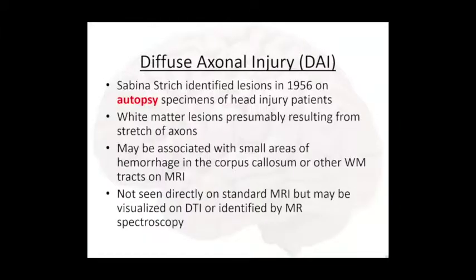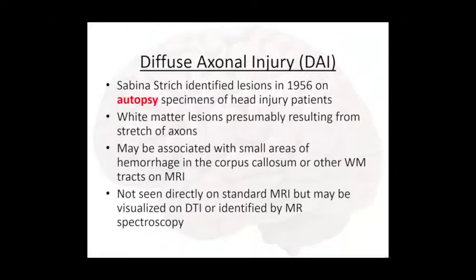There's a lot written in the neurology literature about injuries to the brain and diffuse axonal injury. This is a lady named Strich who started working on tissue specimens back in the mid-50s. She noticed she was seeing a lot of white matter lesions that she thought were due to stretch of the axons, and maybe some small areas of hemorrhage seen in the corpus callosum.